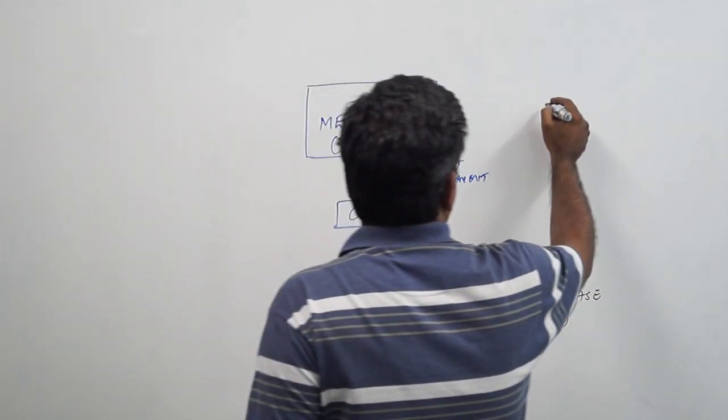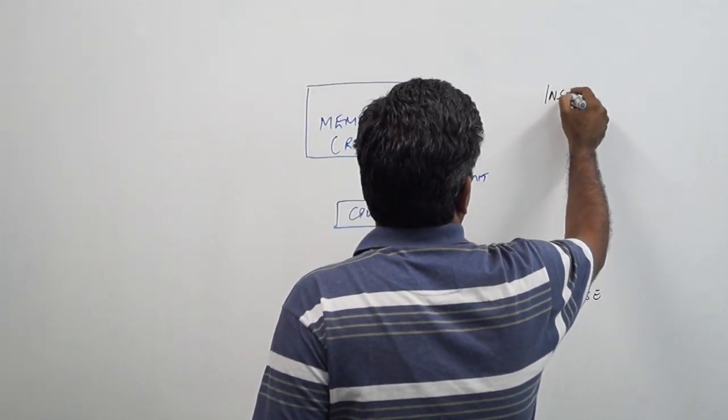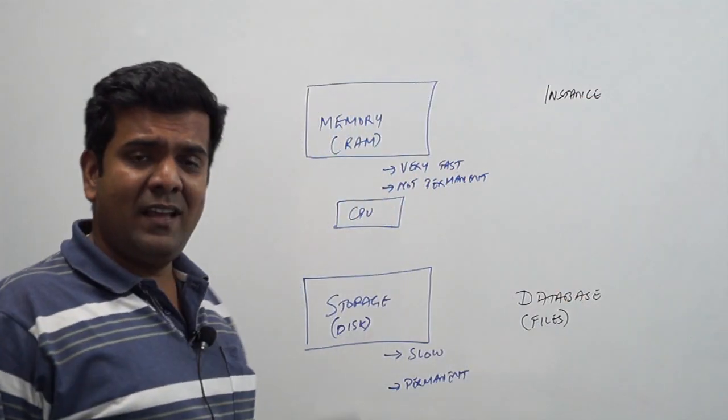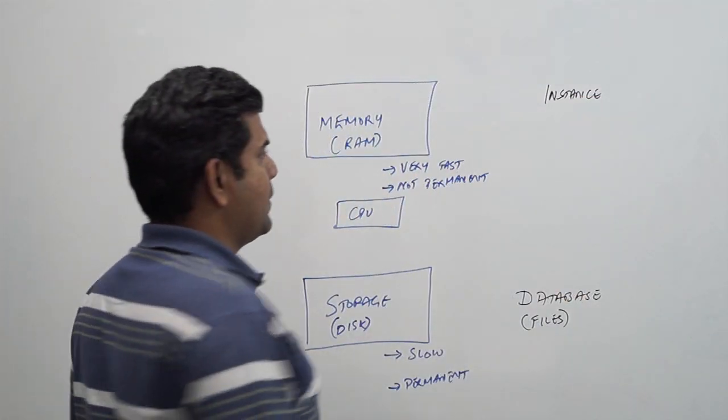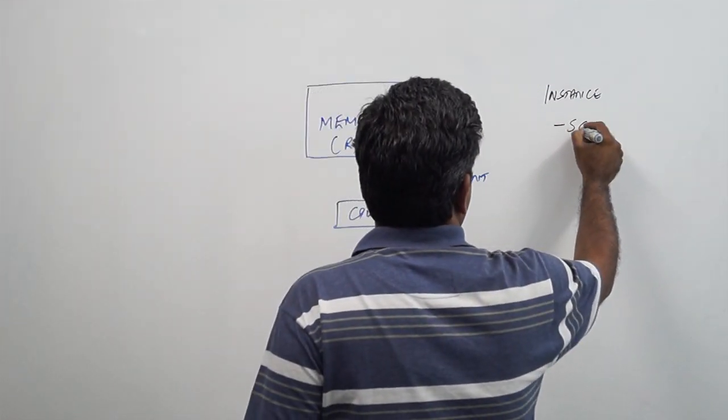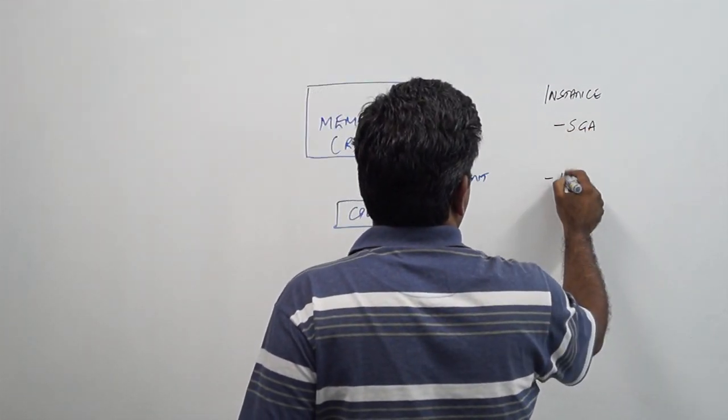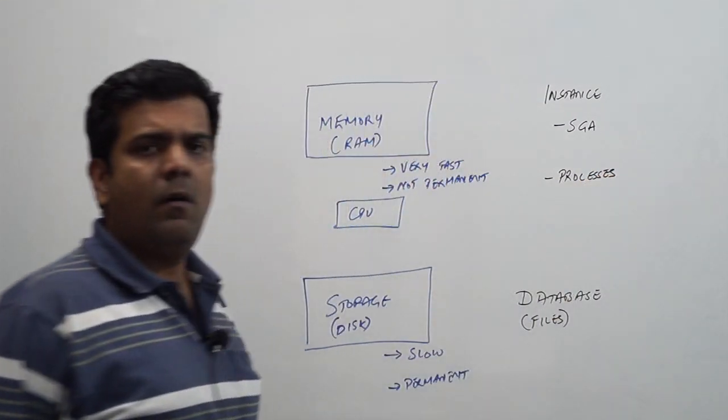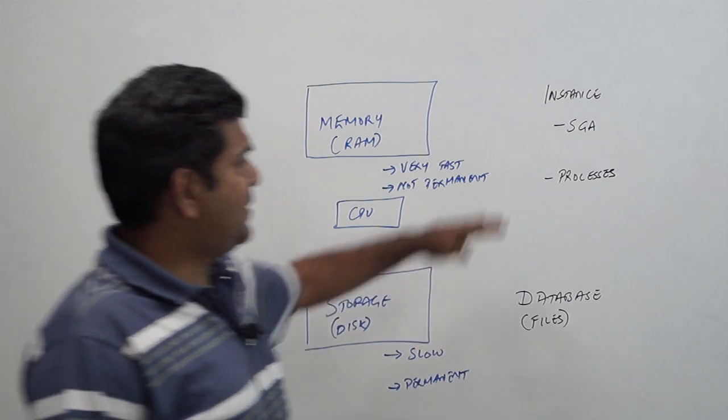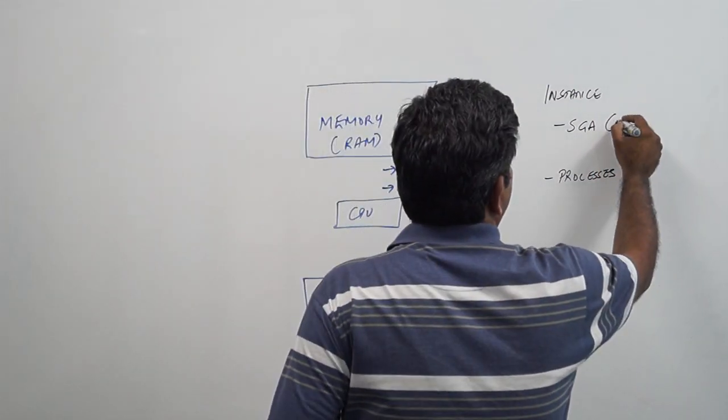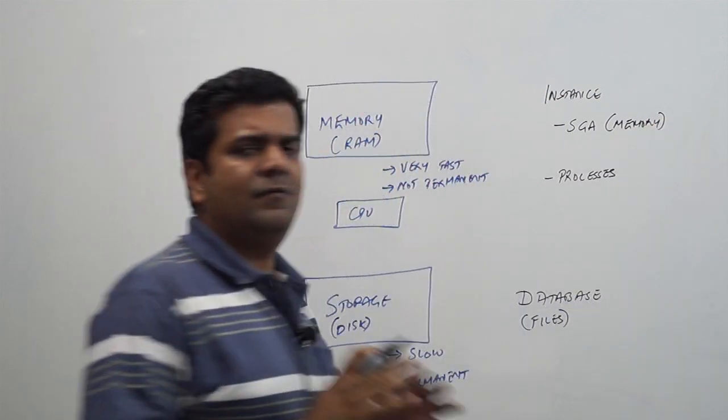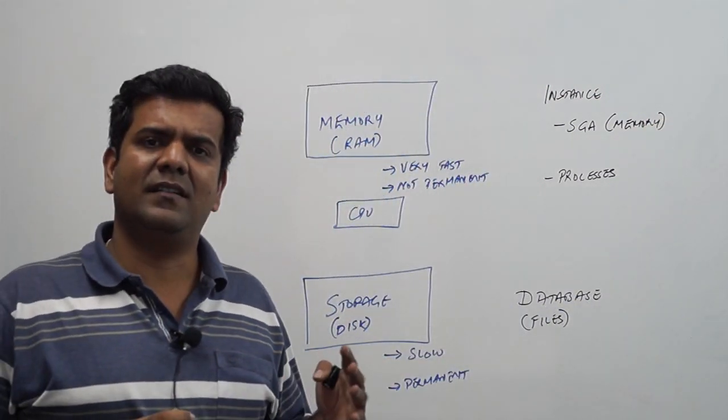Similarly I have a structure for the memory called an instance which actually has two sets of components: one is called the SGA and the other is a bunch of processes.